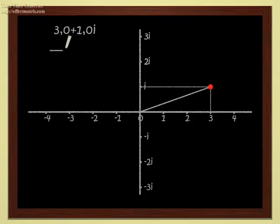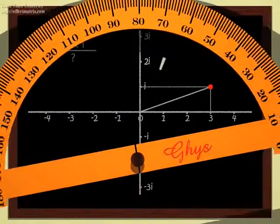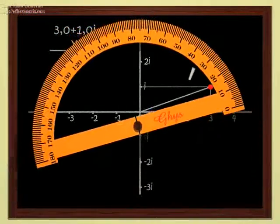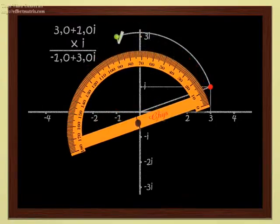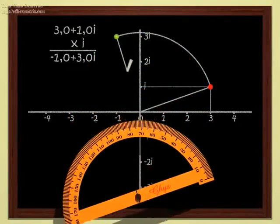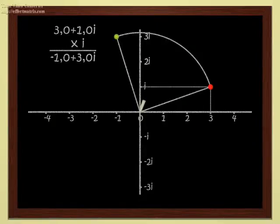Multiplying by i is not difficult either, since we know that i corresponds to a quarter turn. In order to multiply 3 plus i by i, we just have to rotate by a quarter turn. We get minus 1 plus 3i. Not so complicated, these complex numbers.